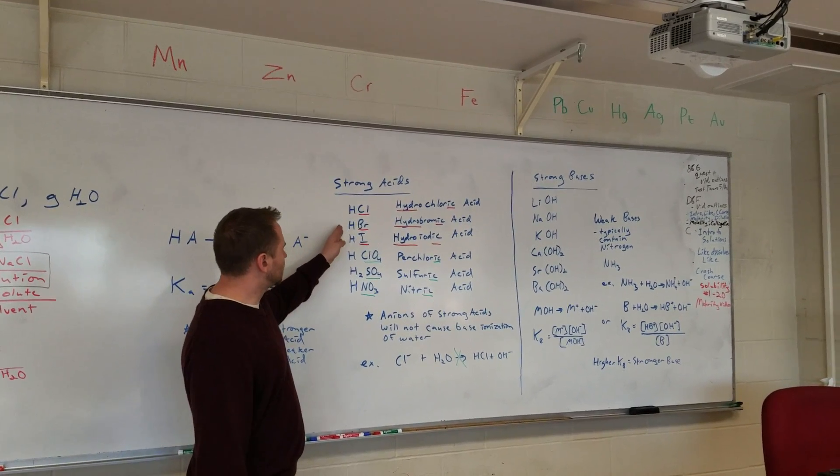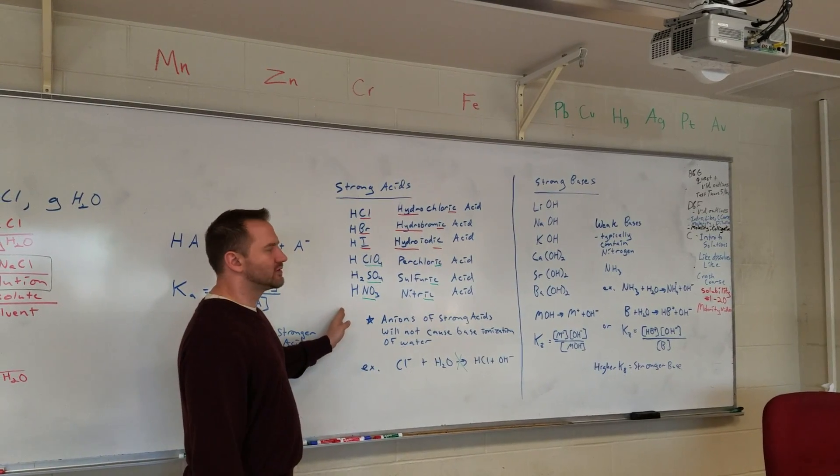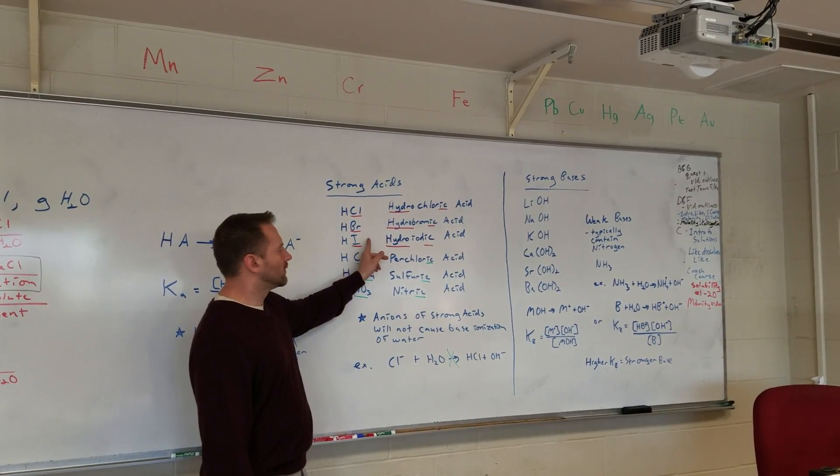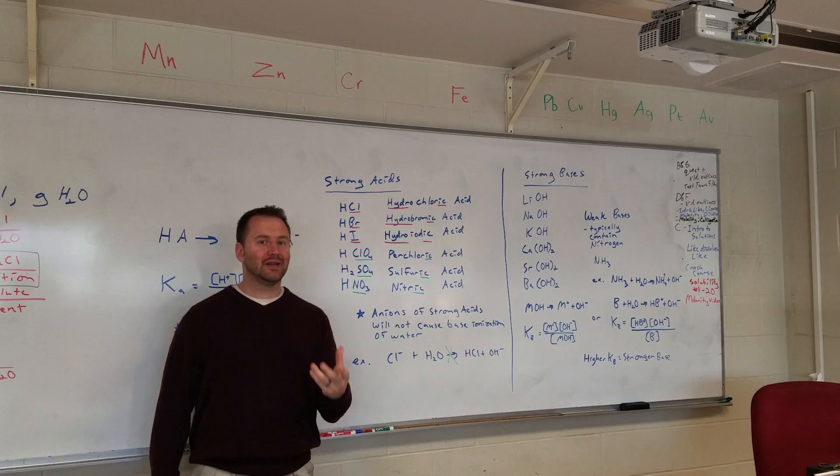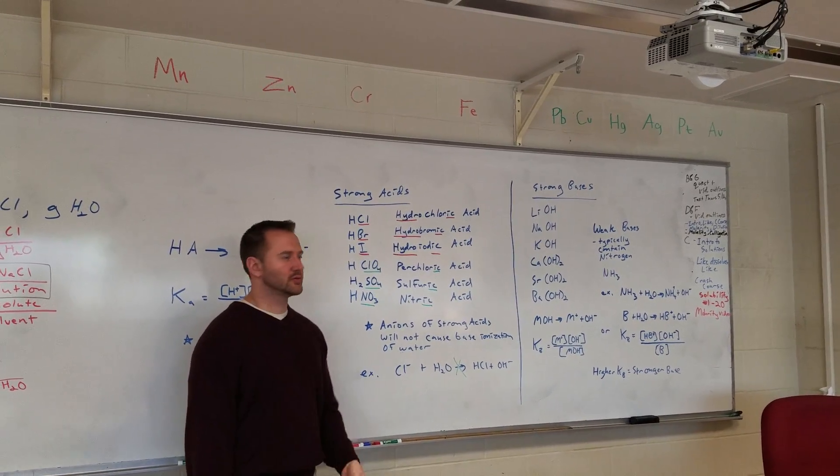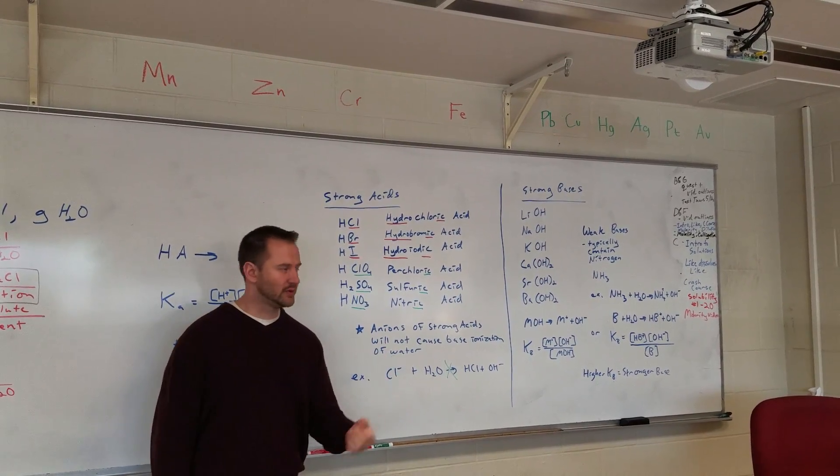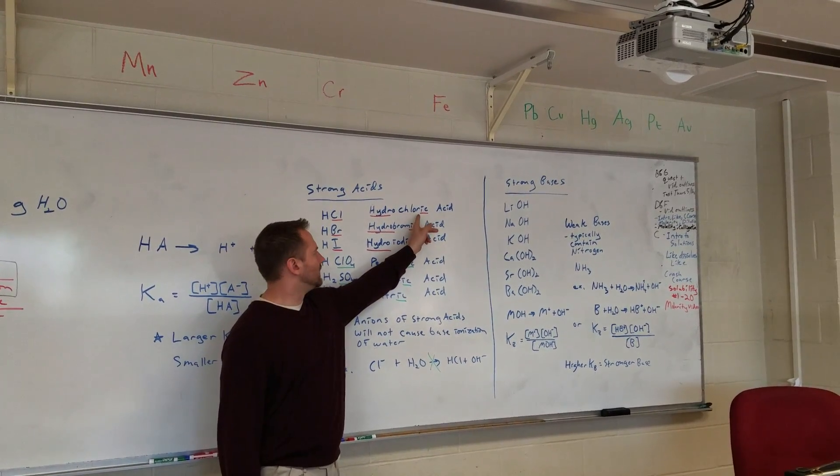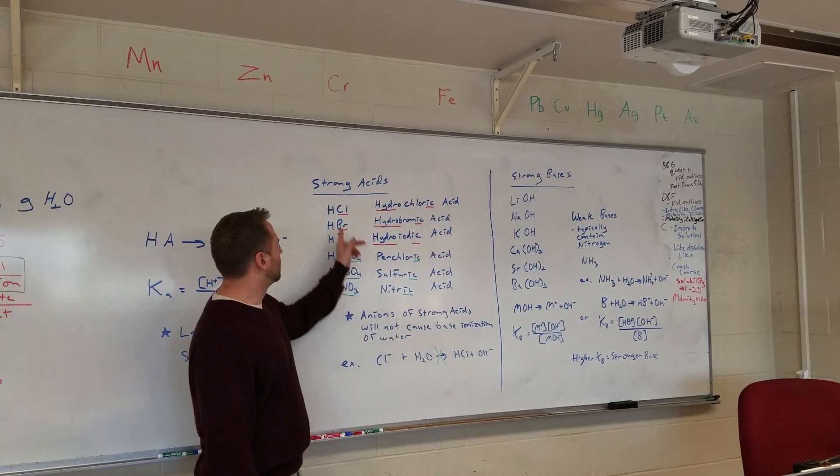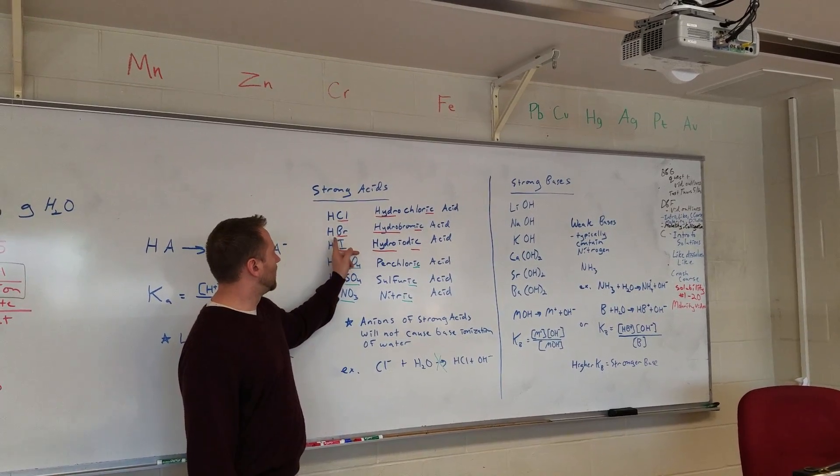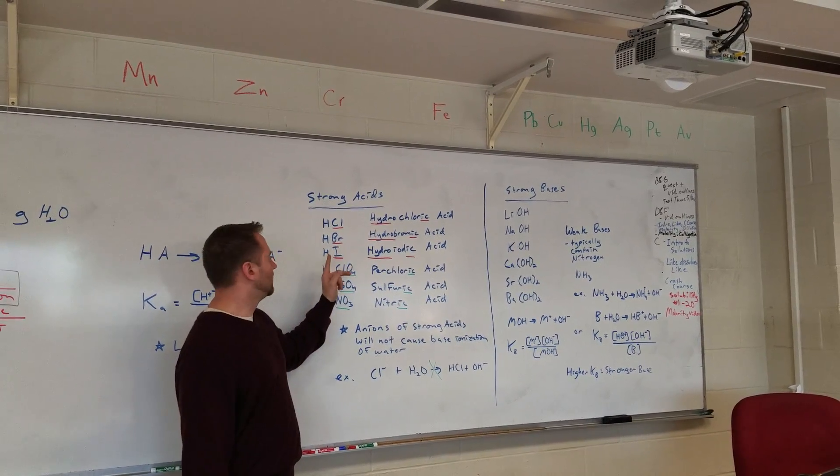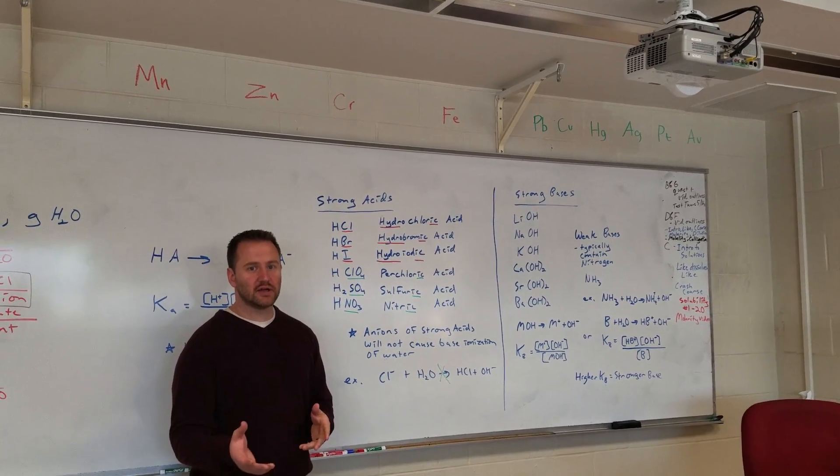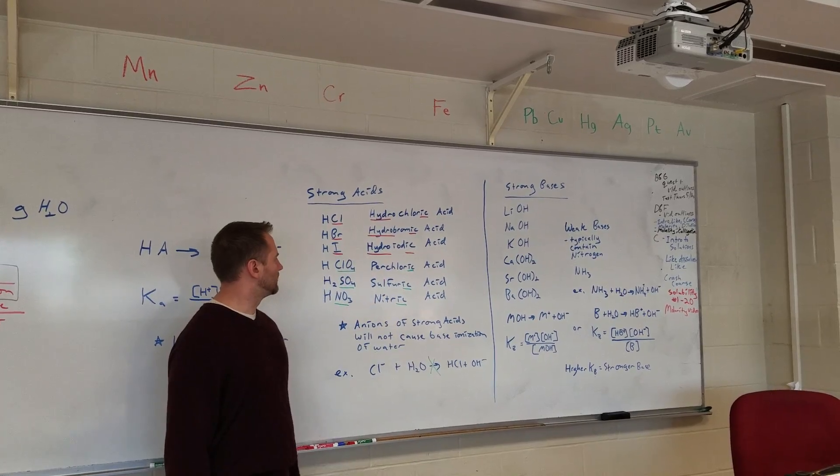All of these would be examples of strong acids, and just quickly go over the naming. If you have a monatomic anion, meaning it's just one element that is the anion component, so it's hydrogen with one element, you would use the word hydro, and then whatever the element is, and then -ic acid. So hydrochloric acid, hydrobromic acid, hydroiodic acid. You just say whatever the name of the anion is and add the ending -ic after the word hydro.